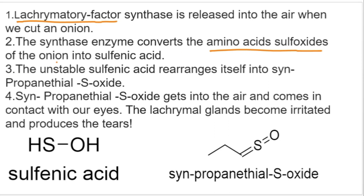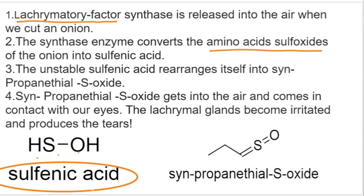These compounds are converted into sulfenic acid. Sulfenic acid is very unstable and it readily rearranges itself into syn-propanethial S-oxide, which is a gaseous compound. When it goes into the air and reaches our eyes, it automatically produces tears, because it is a lachrymatory agent.